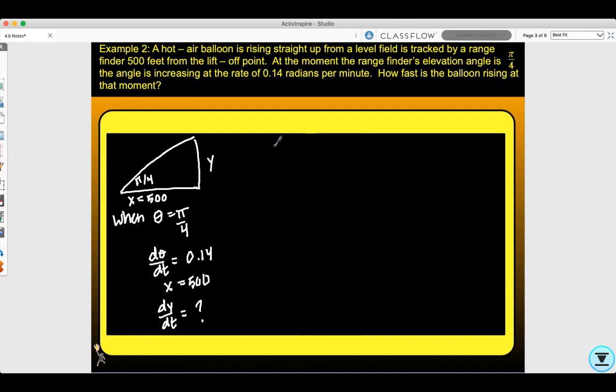Looking at this, I have opposite over adjacent. So tangent θ equals y over x. My known is x equals 500, so tan θ equals y/500.